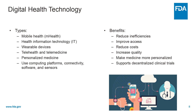A lot of this information can be collected off-site — it's not required that the patient journey to a particular clinical center or healthcare provider. This really facilitates decentralized trials and also facilitates collecting information from patients who can't easily report what's happening, such as infants or people who are cognitively impaired. The benefits are clear: it reduces inefficiency, improves access, can reduce costs, increases quality, can make medicines more personalized, and supports decentralized clinical trials not limited to one clinical site or geographic area.